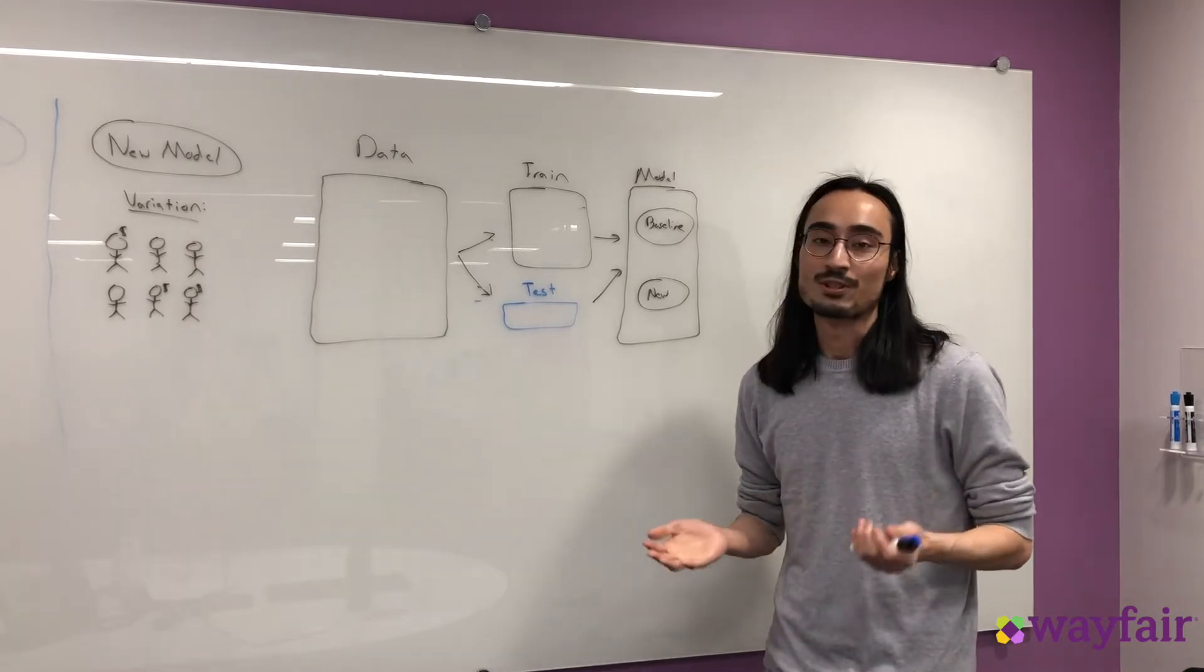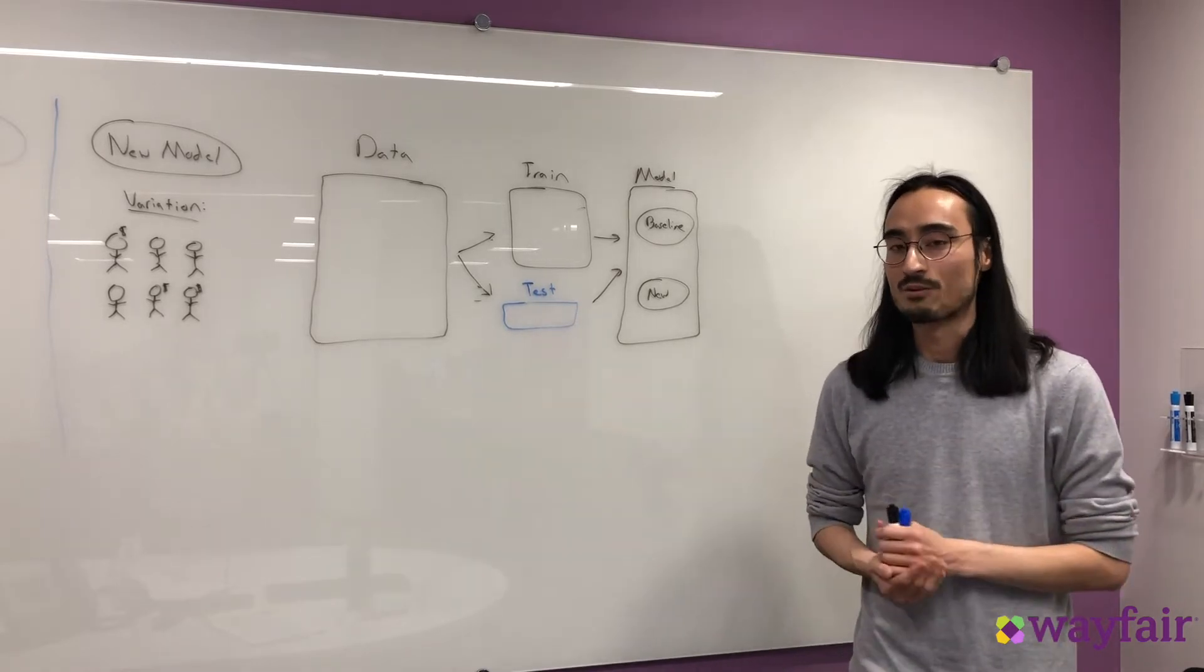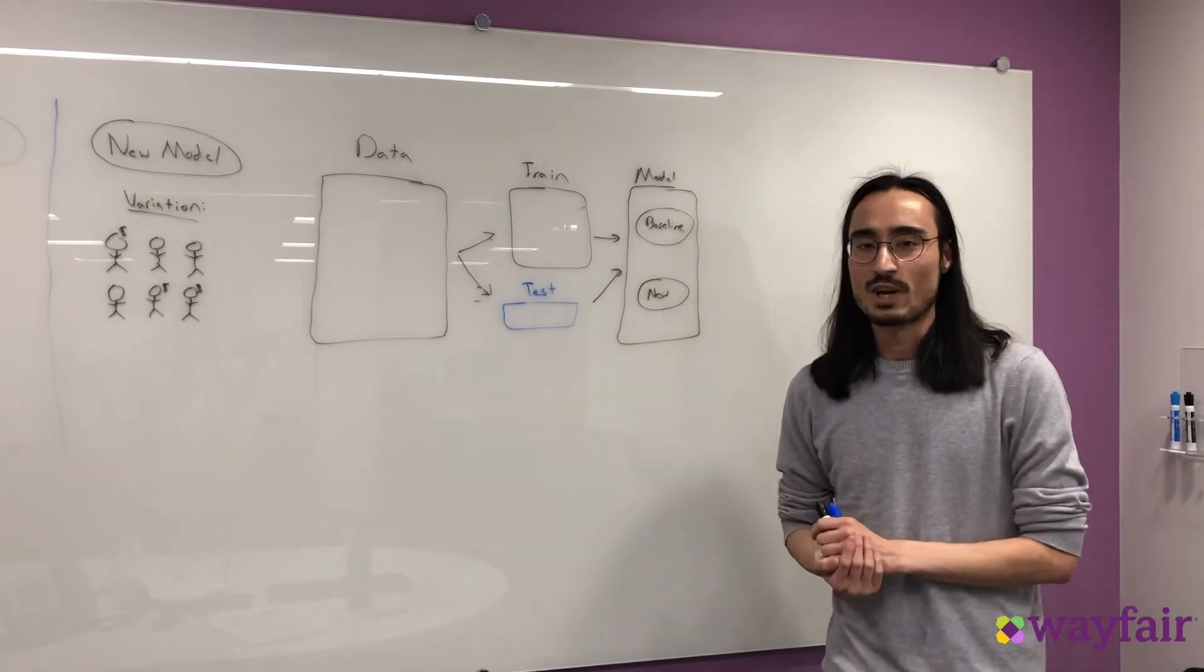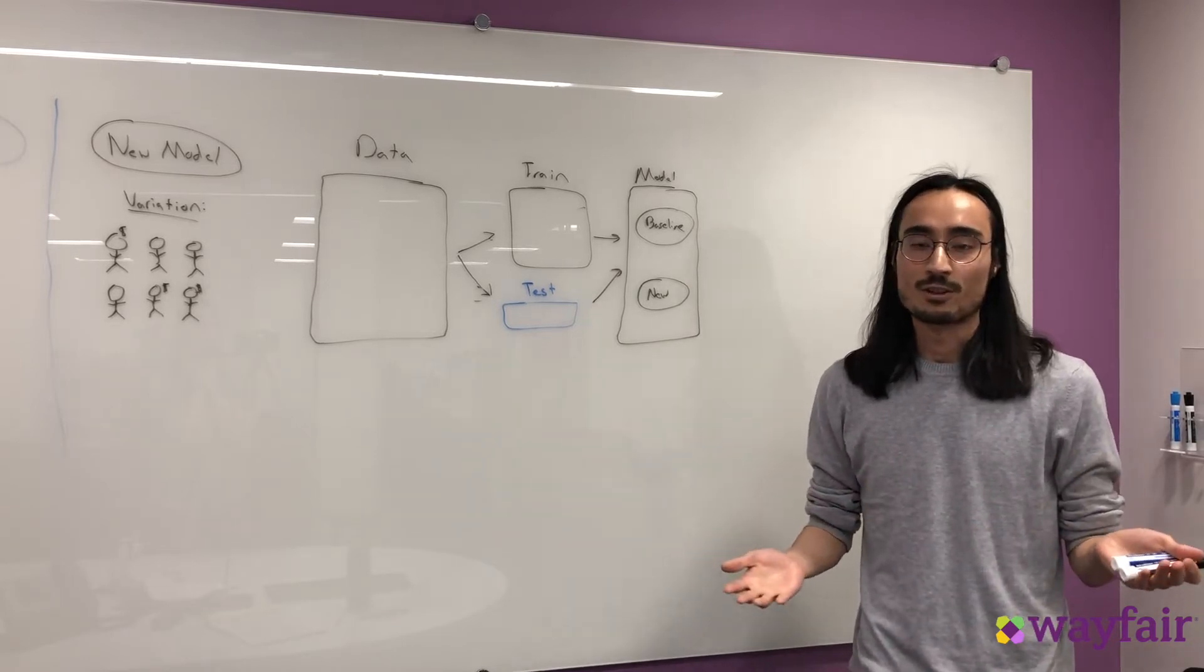An example is if you have a regression type model, you might use something like the mean squared root error. But if you have a classification type model, you might use accuracy or area under the ROC curve or something like that.